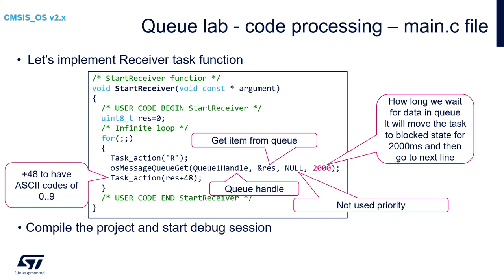The third argument is unused priority, and the timeout — in this case I used two seconds, 2000 milliseconds. Again, it would be better to use either osWaitForever or to check the status and perform a different action to repeat getting data if it's not osOK. We cannot get data from the queue when the queue is empty, and we wait for new data to be pushed by other tasks. This is the ultra-optimistic version.